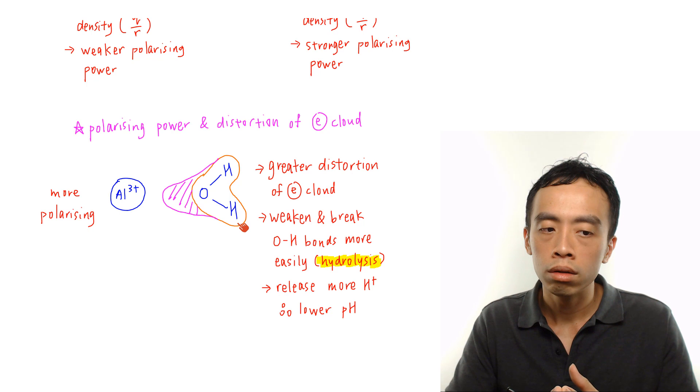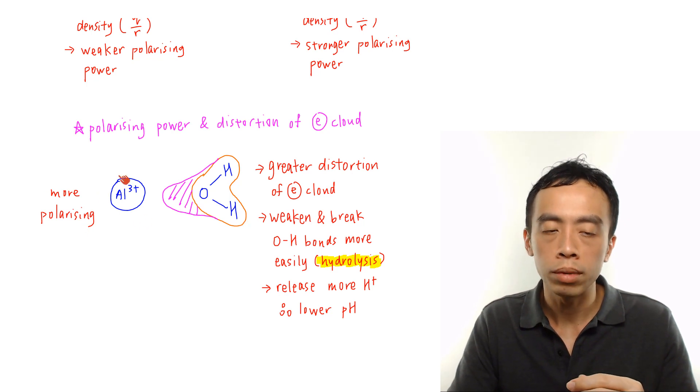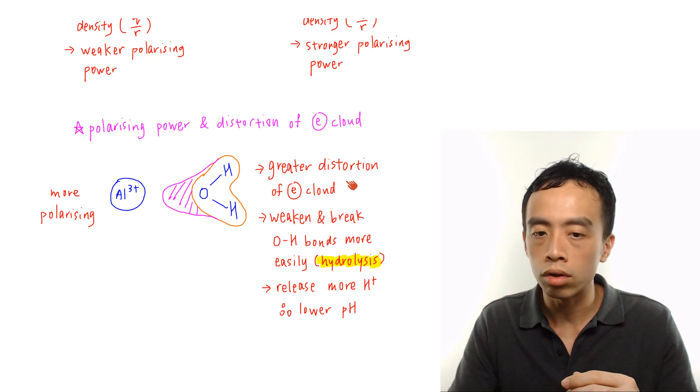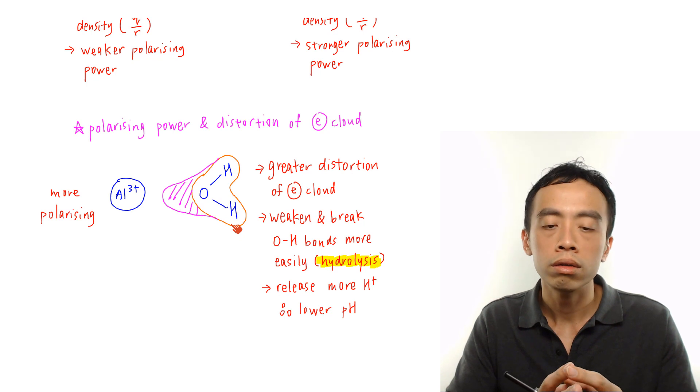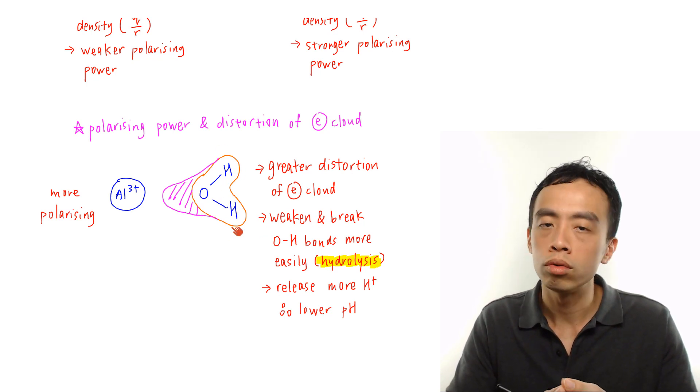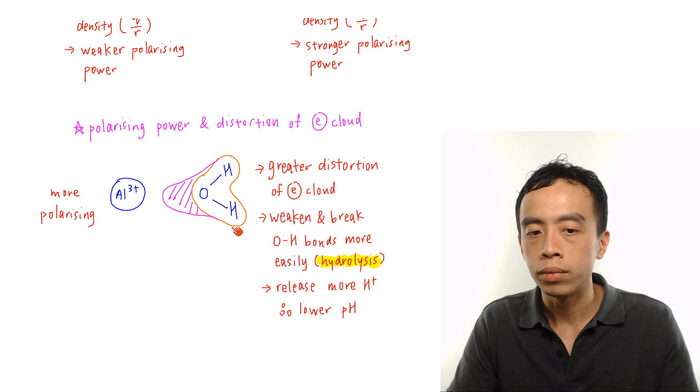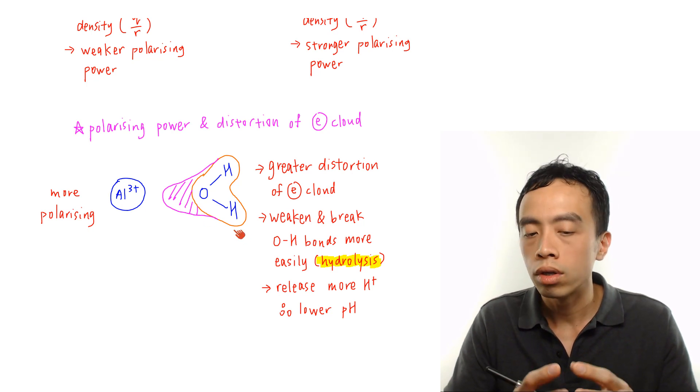So in general, the more polarizing the metal cation, then the greater the distortion of the electron cloud, then the bonds within this molecule will be weakened and the OH bonds will be weaker so therefore it is easier to break the OH bonds to release H+.